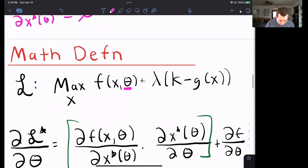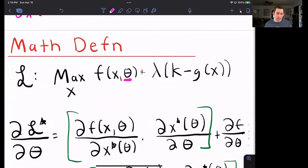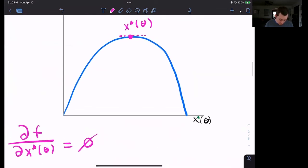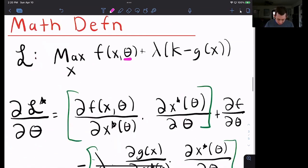Well, we can do a total derivative. So here is the derivative of the Lagrangian at the optimum with respect to theta. This is the total derivative version of that. And now let's use that envelope theorem result that we just saw, where at the optimum, the derivative of the function is equal to zero.